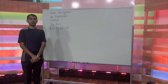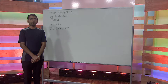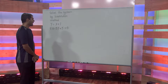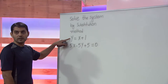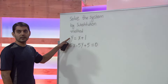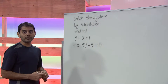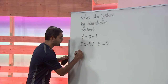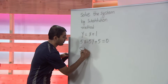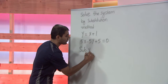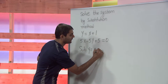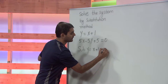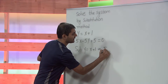In the method of substitution, it is convenient to have one of the variables isolated. As we see in the first equation, y is isolated by itself. To find the values of x and y, we substitute y equals x plus 1 in the second equation.